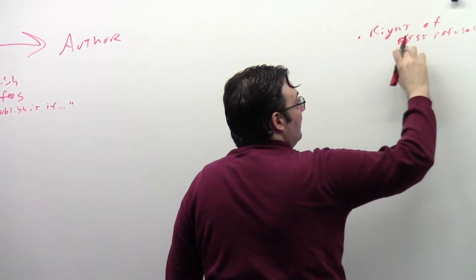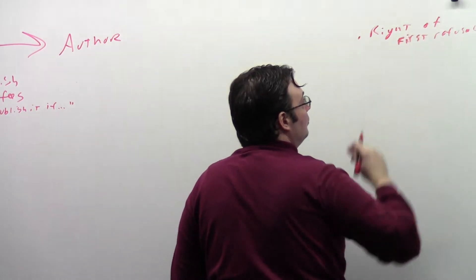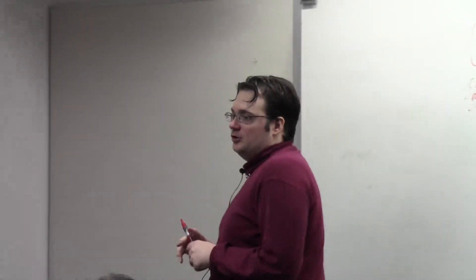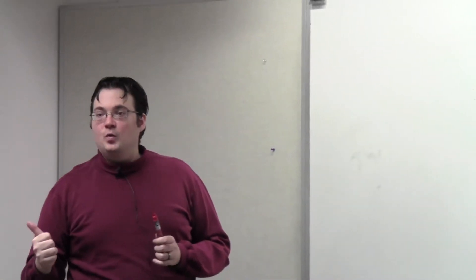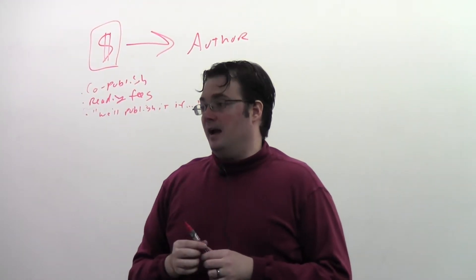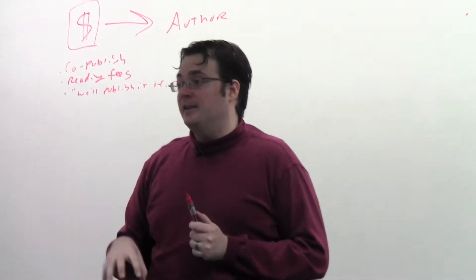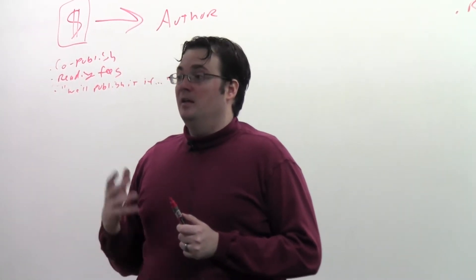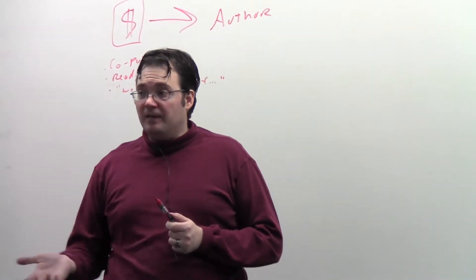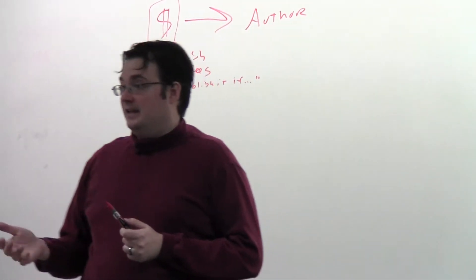Right of first refusal usually contains two types of clauses. The first one is you have to show it to us first. For me, for instance, my right of first refusal is series-tied, so I have to show them the next Way of Kings book. They have rights of first refusal on books in the Stormlight Archive. Anything I write in the Stormlight Archive, they get to see first.